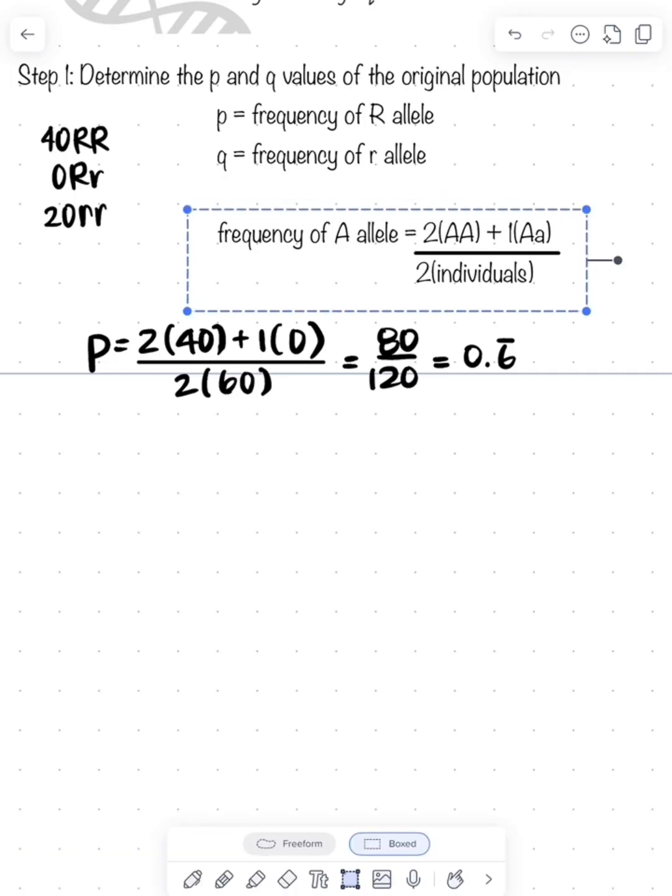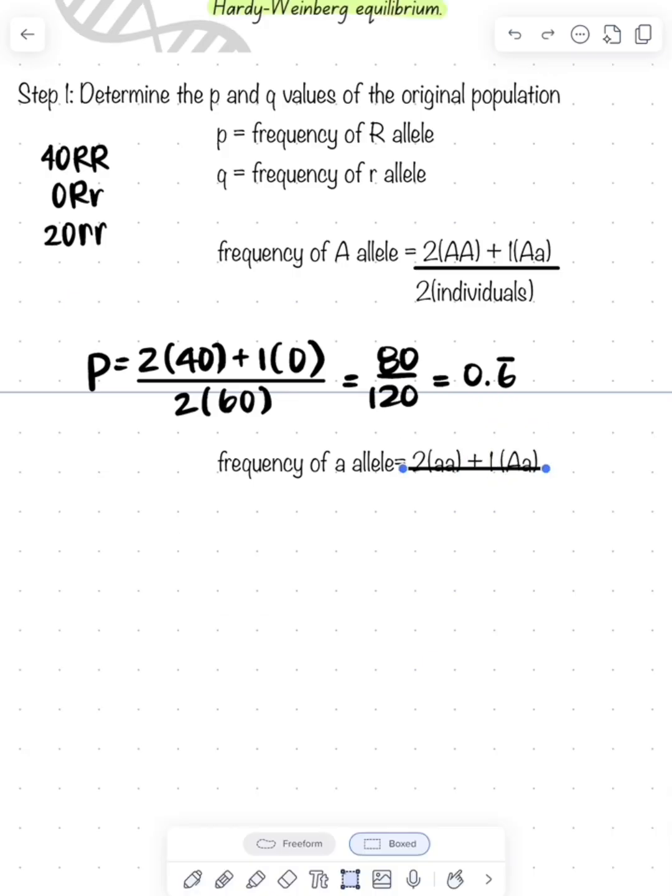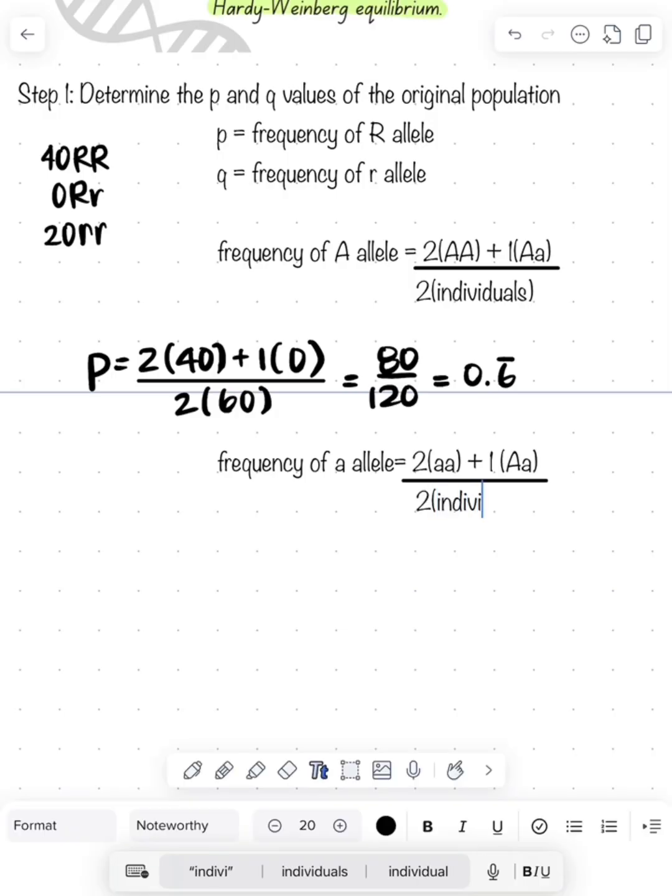To find my Q, I'm going to copy and paste this formula down here, the frequency of my recessive allele. Again, I'm using a lowercase a for this. So two times homozygous recessive, plus heterozygous, divided by two times the number of individuals.